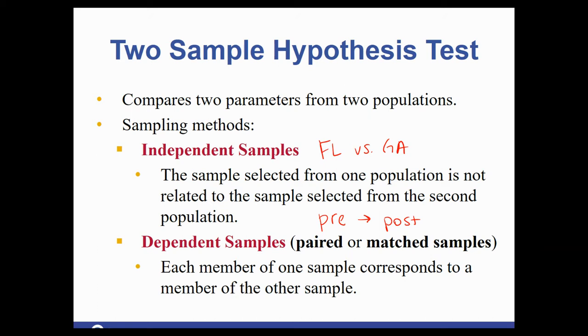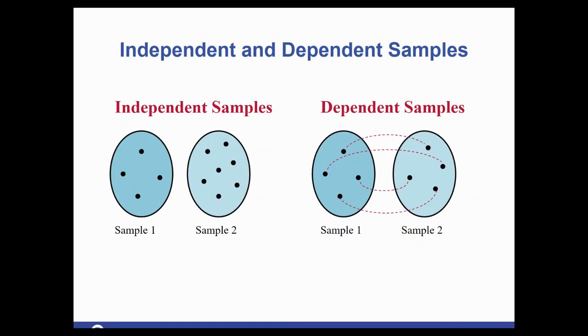So this section is specifically going to be working with independent. But the first couple examples we have are just to check to make sure we understand and can see the difference between independent and dependent. So here's a nice little visual. Sample one and sample two under the independent have nothing in common. These are different people, for instance, in each group. They can also have different sample sizes. They don't have to have the exact same number.